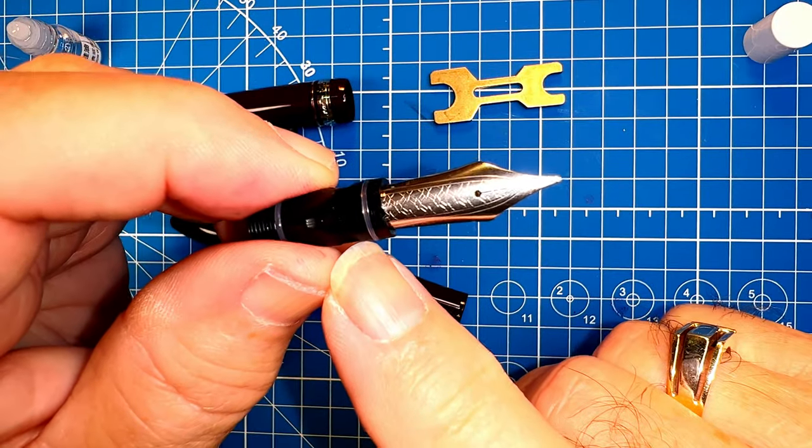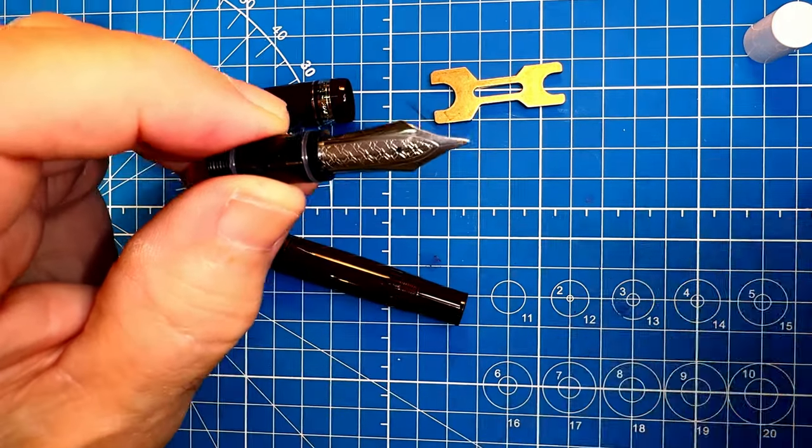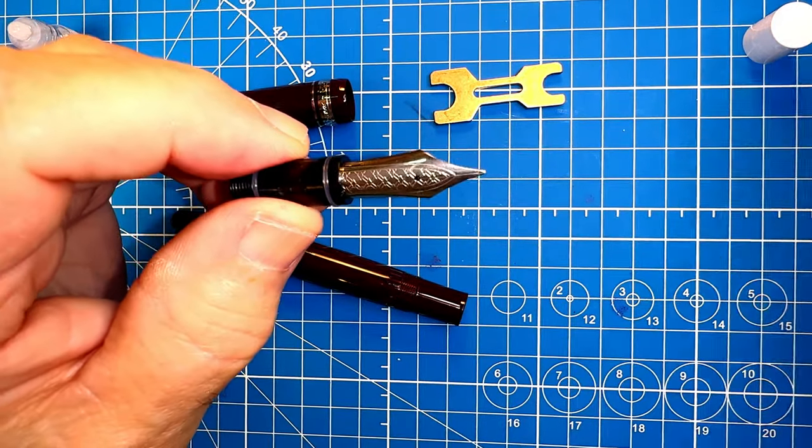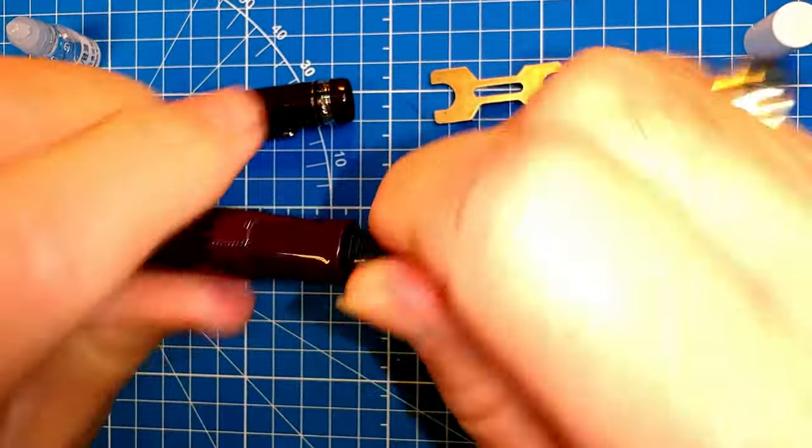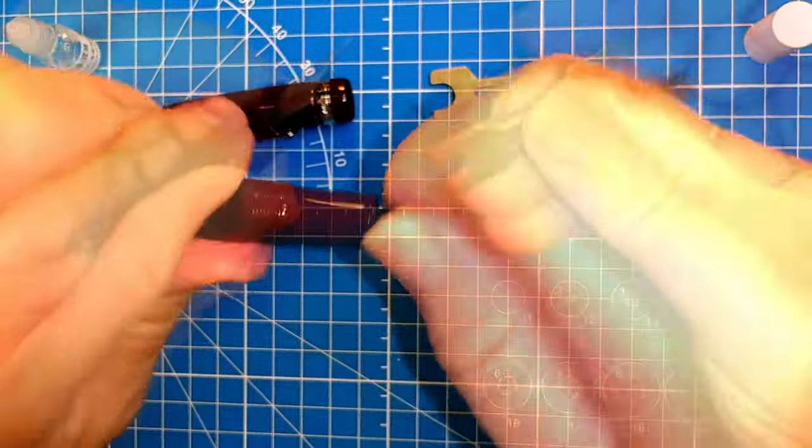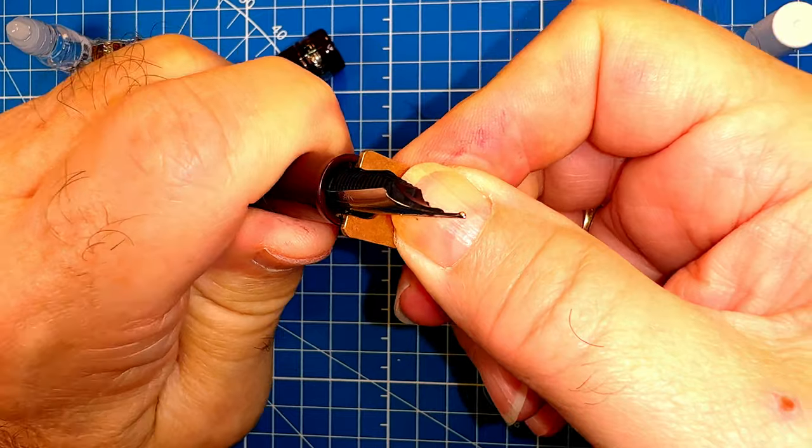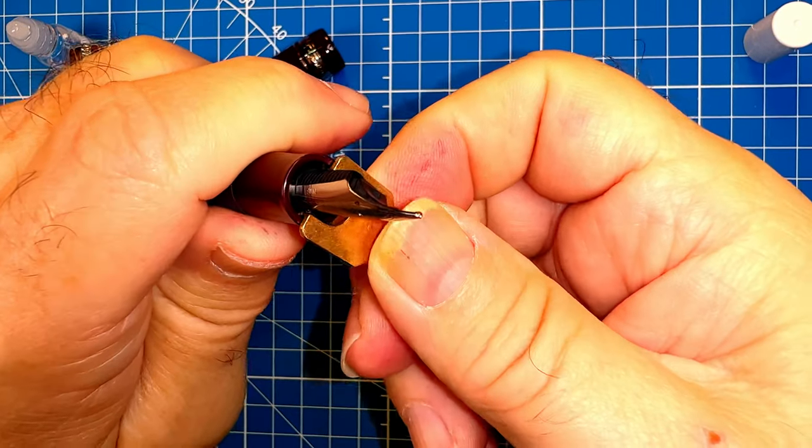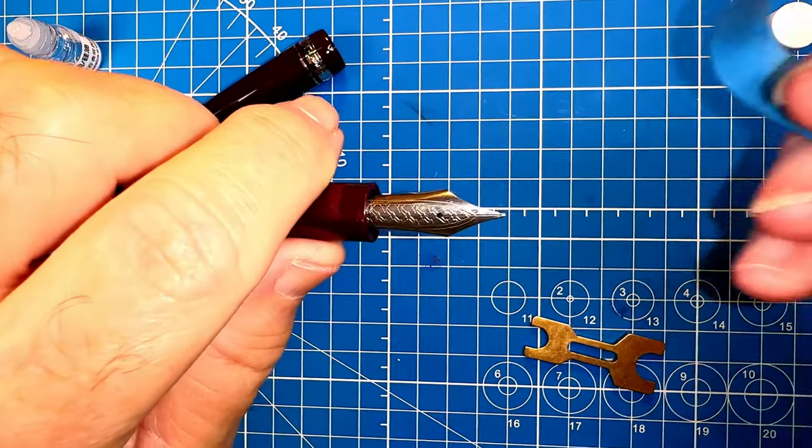You can further disassemble the nib unit as well by pulling the nib and feed out of that collar. And the best way to do that is to put it back into the section of the pen and then you can use the pen for leverage. We're going to use the small end of the wrench and turn the body of the pen again just to give it hand tight. Do not over tighten. That'll give us some leverage to pull this nib.